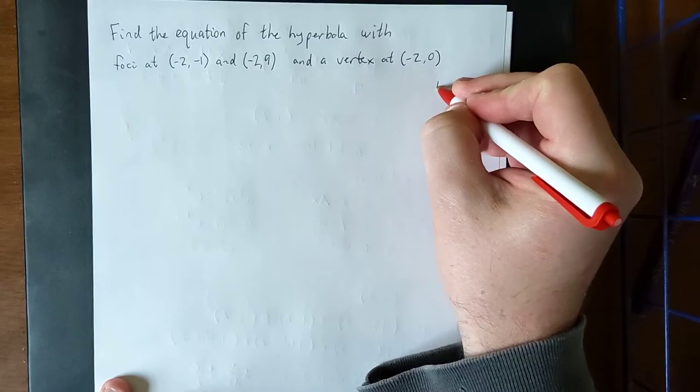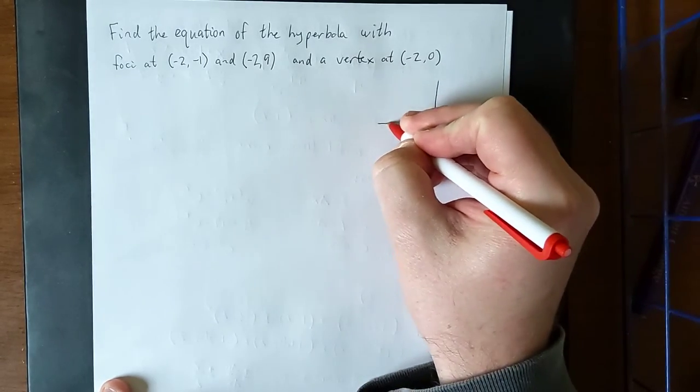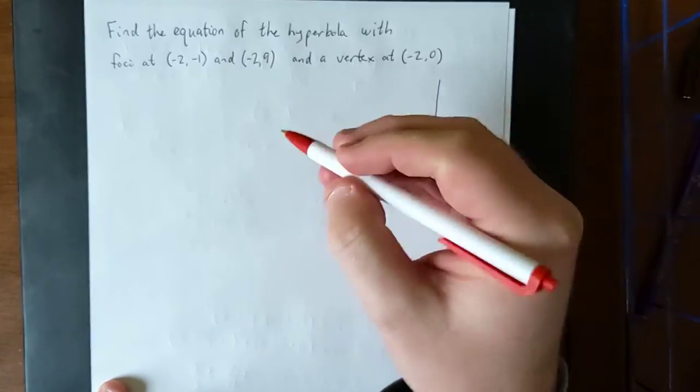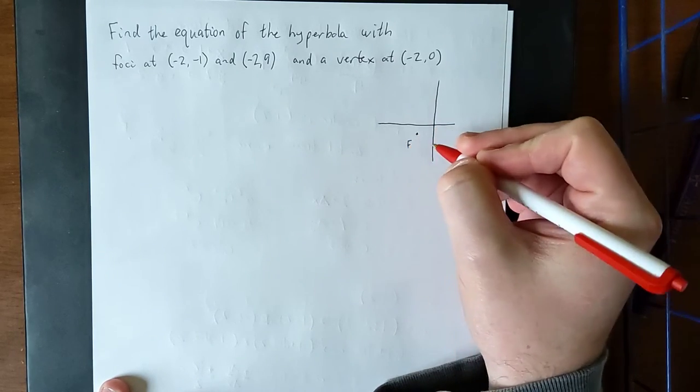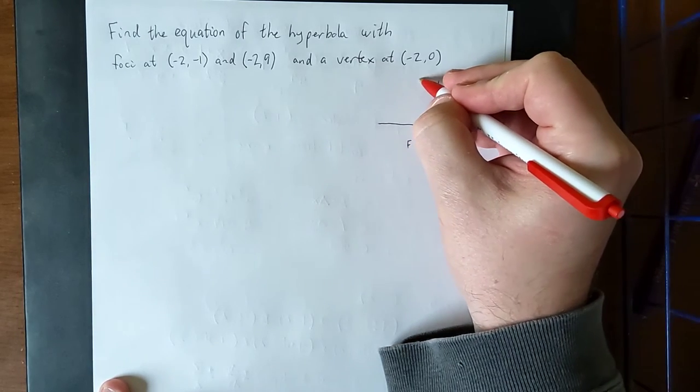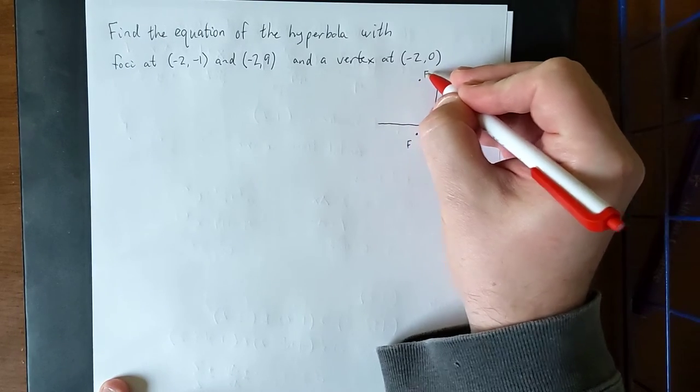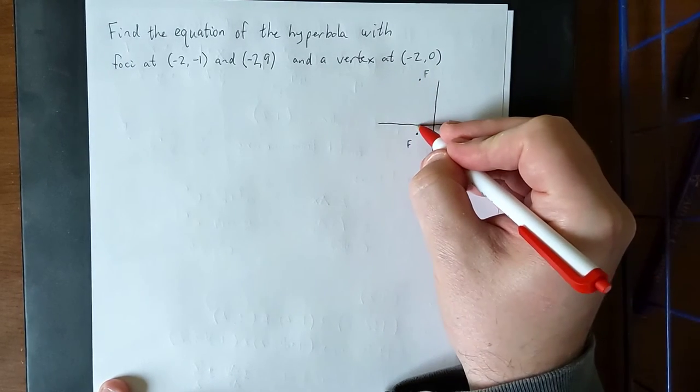So first thing I'd like to do is sketch a general picture of what this is going to look like. We have a focus at (-2, -1). We have another focus at (-2, 9), way up here. And we have a vertex at (-2, 0).